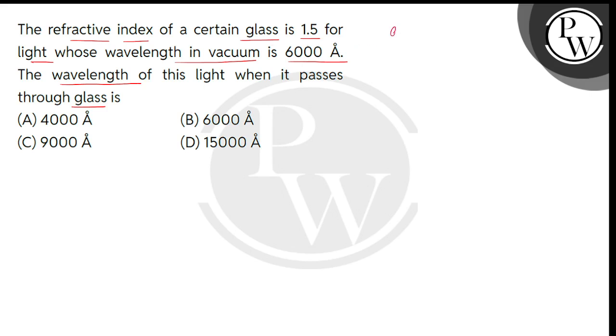So bachyo, given is the glass's refractive index, which we can write as mu G, which I'll also call the absolute refractive index, that is with respect to air.